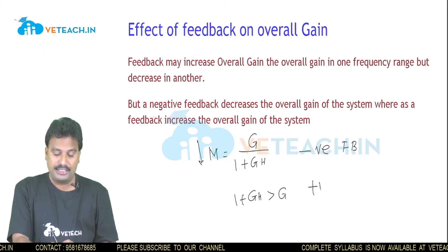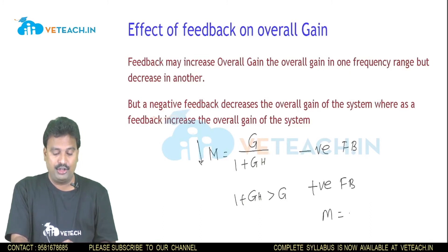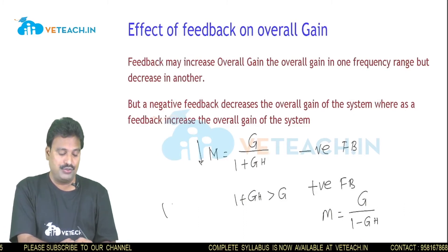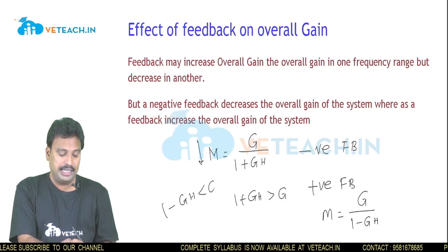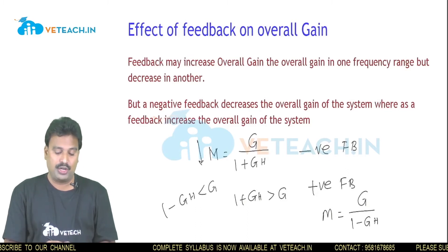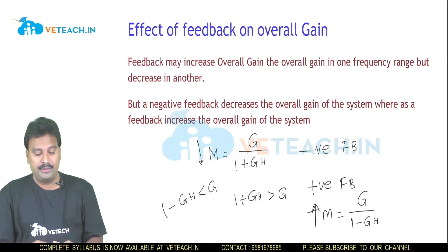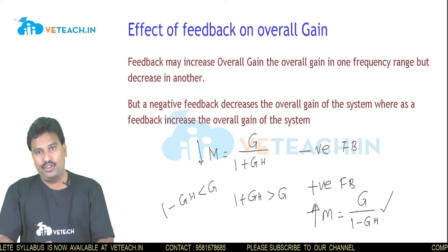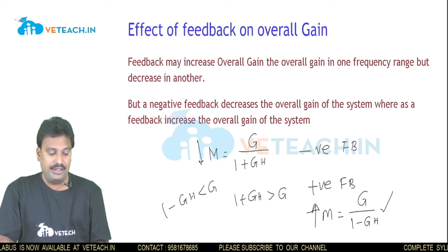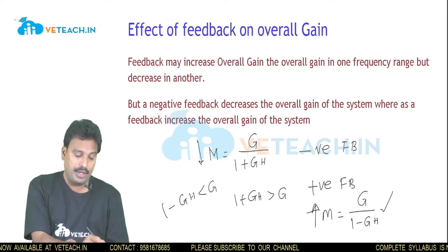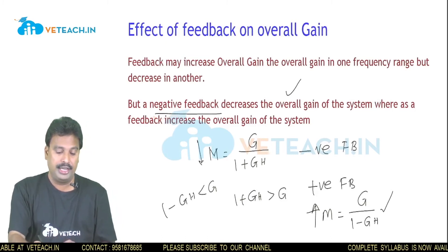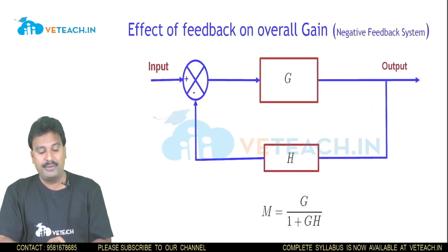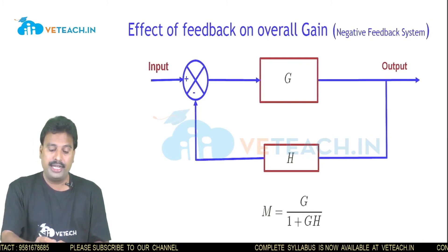For a positive feedback system, M = G / (1 - GH). The value of 1 - GH may sometimes be less than G, in which case the gain increases. That means positive feedback increases the overall gain, while negative feedback decreases the overall gain.